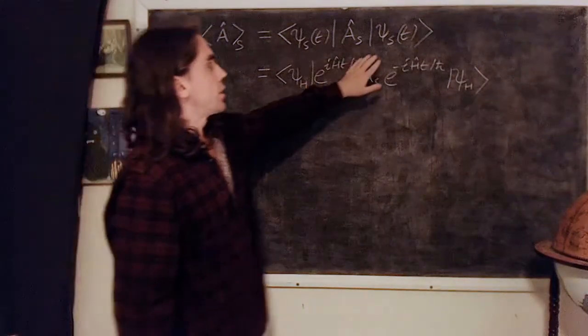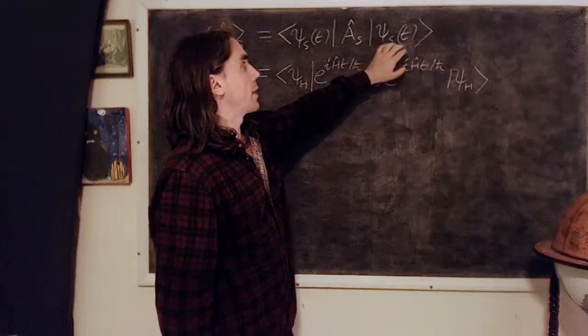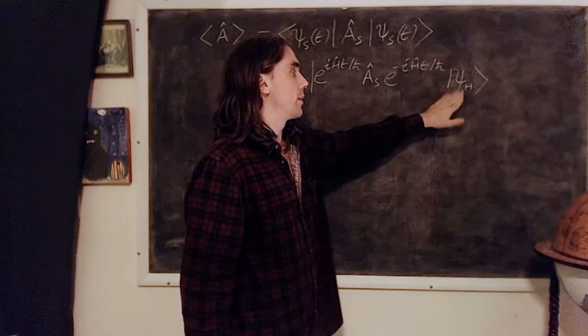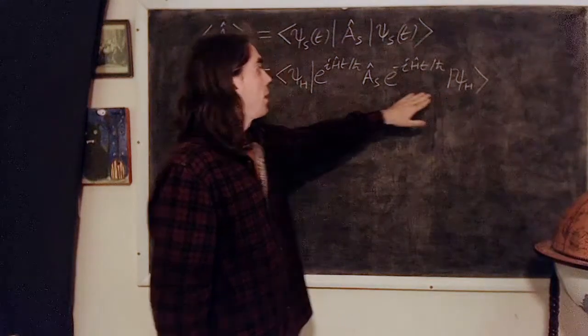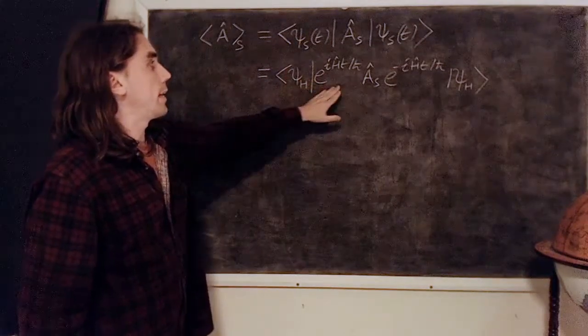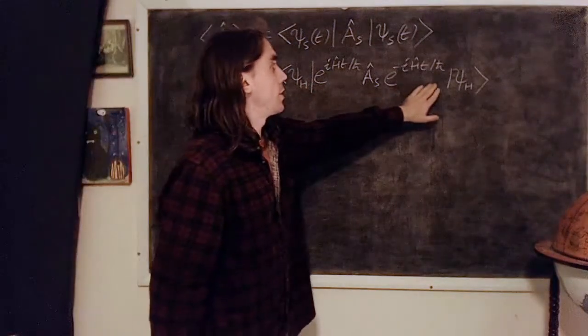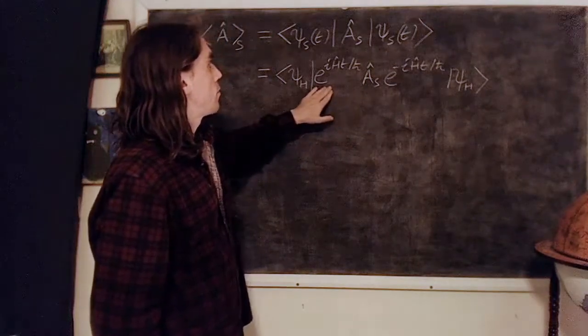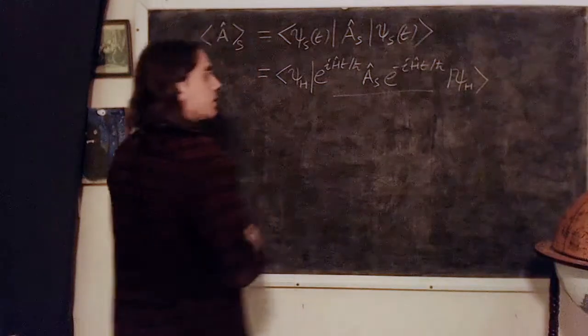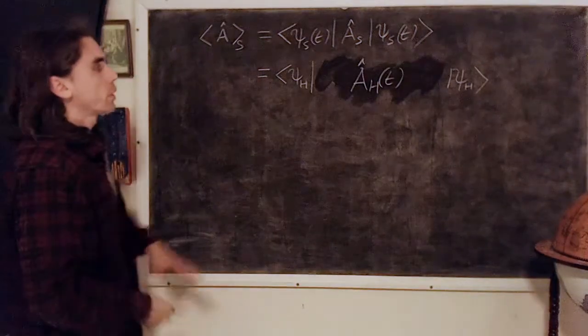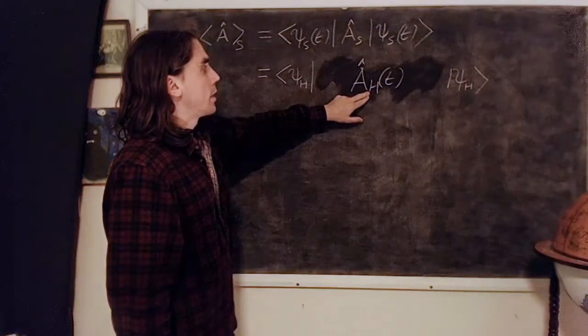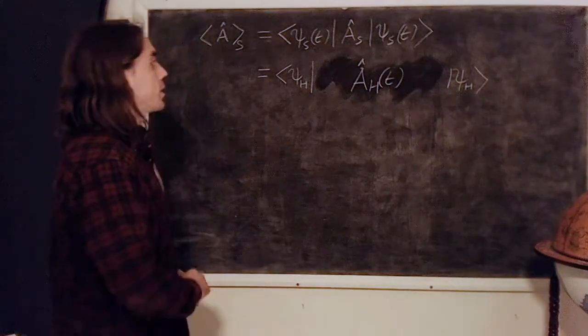We can write that as follows: I've taken the state ψ in the Schrödinger picture as a function of time and written it as the unitary operator acting on the time independent Heisenberg state. I've done the same for the Hermitian conjugate, and the Hermitian conjugate of this unitary is this where the minus sign has disappeared. This quantity here is nothing other than the time dependent Heisenberg operator.